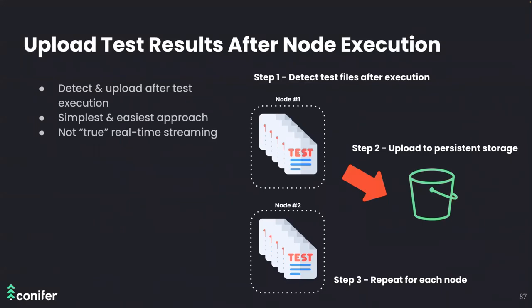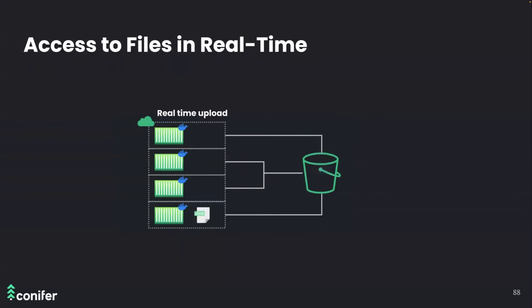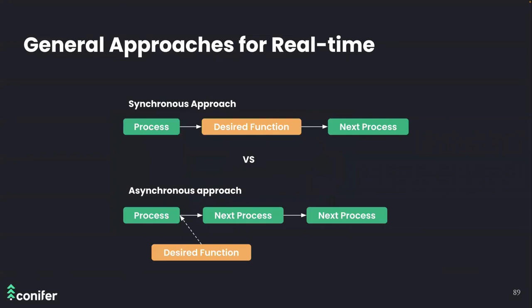The easiest approach would be to defer uploading test artifacts until after all tests on a single node finish running. Running a script after this to upload would be trivial, but this is not good enough — we want Conifer to communicate test results in real time, as they are when running Cypress locally. Accomplishing this requires retrieving test results from each node in real time as they are generated.